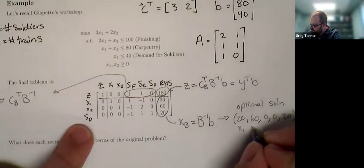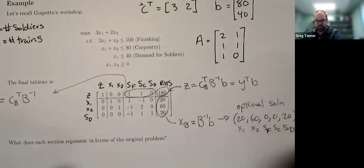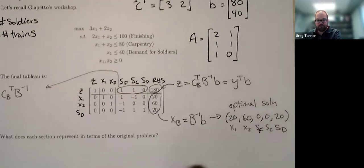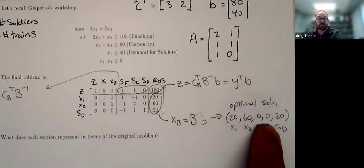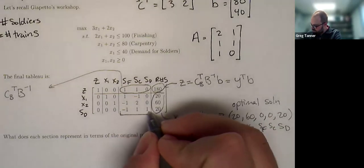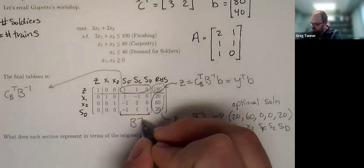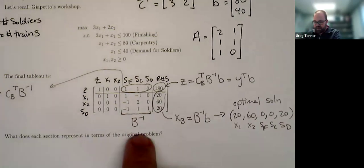So that's X1, X2, SF, SC and SD. Essentially this vector gives us the values for just the basic variables, the non-basic variables, we then fill in with zeros. This part that's underneath the slack variables, that's B inverse. So if we take the columns of our basis matrix and put them together into a B matrix, this is the inverse of that matrix.